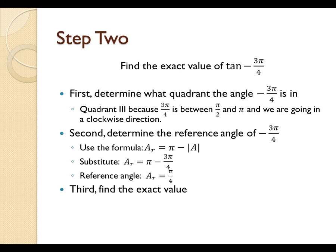So, now we need to find the exact value of this angle. In this case, the tangent of negative 3π over 4 is equivalent to the tangent of π over 4 because tangent is positive in the third quadrant. Finally, tangent of π over 4 is equivalent to 1.